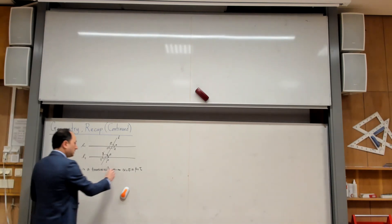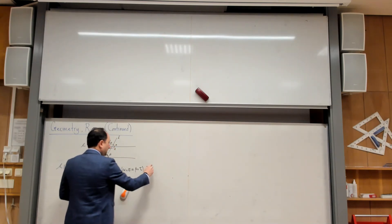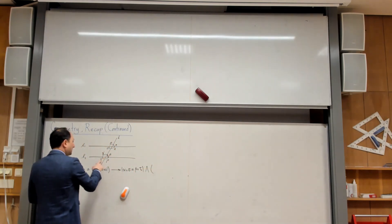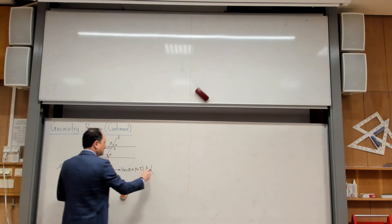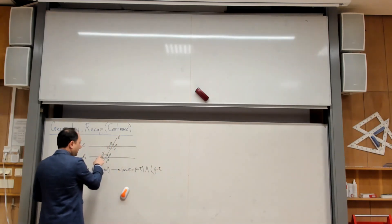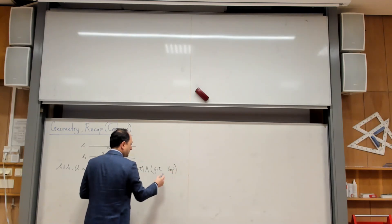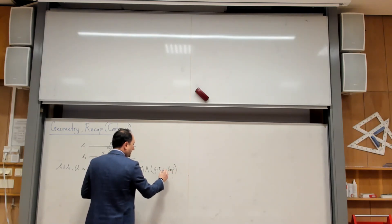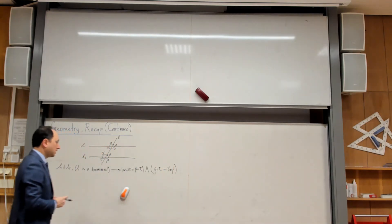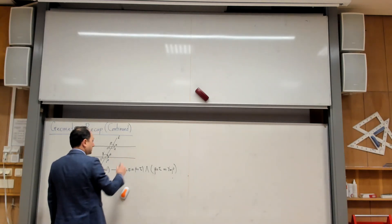So alpha equals sigma, and beta equals tau. If you want to connect and say that these two are also equal, then this is the content of this axiom. Beta and tau are equal, and gamma and rho are equal — not related to this axiom — but if they are equal, I have to use this axiom. That was the content of the corresponding angle axiom.